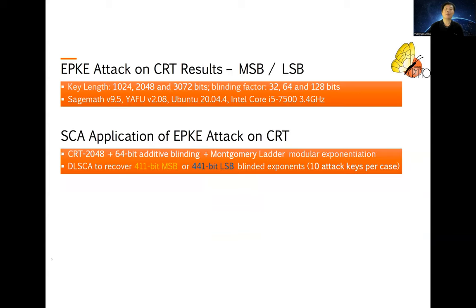In the end, we will show you the experimental results we have done. We used the three different typical key lengths and the three typical blinding factor lengths. In all those experiments, we managed to recover all the CRT cases using one-third of MSB or LSB of DP' and DQ'.